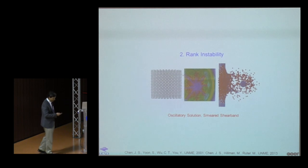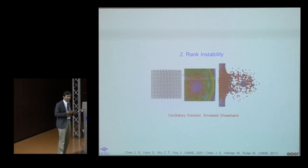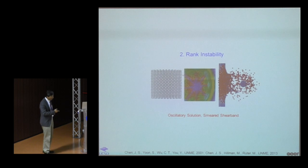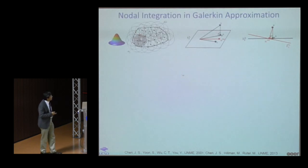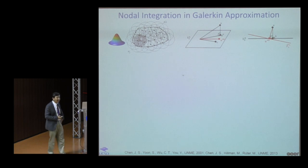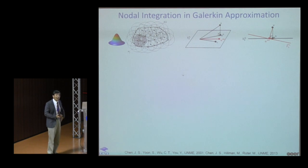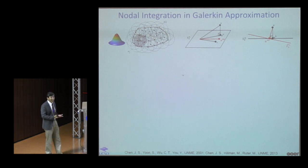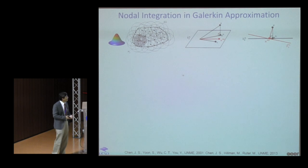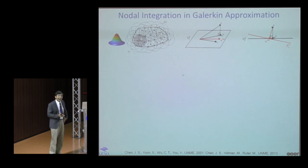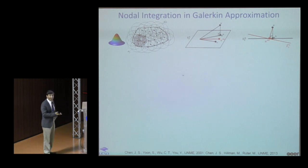Now, the second instability: rank instability due to nodal integration. Gauss quadrature is not feasible for these problems. Galerkin orthogonality requires accurate domain integration; nodal integration is reduced-order integration with large quadrature error, causing loss of Galerkin orthogonality and best-approximation property.